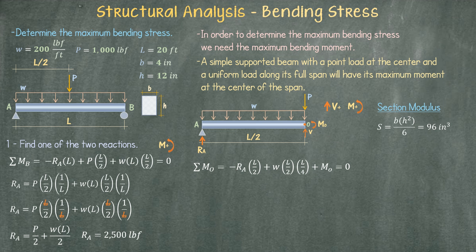We then equal this to zero and solve for the unknown, which is the moment at point O. We plug in the values for the variables and determine that the moment at the center of the beam is 15,000 pounds force per feet.